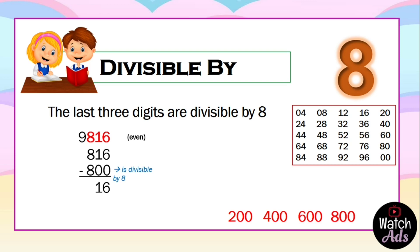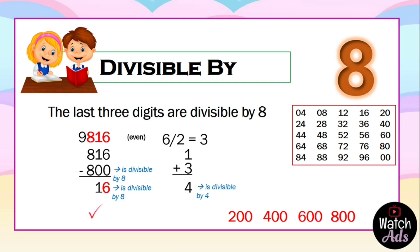If you still want to check using Method 1: divide the last digit, 6, by 2 to get 3, then add 1, which equals 4. Since 4 is divisible by 4, this confirms that 9816 is divisible by 8.